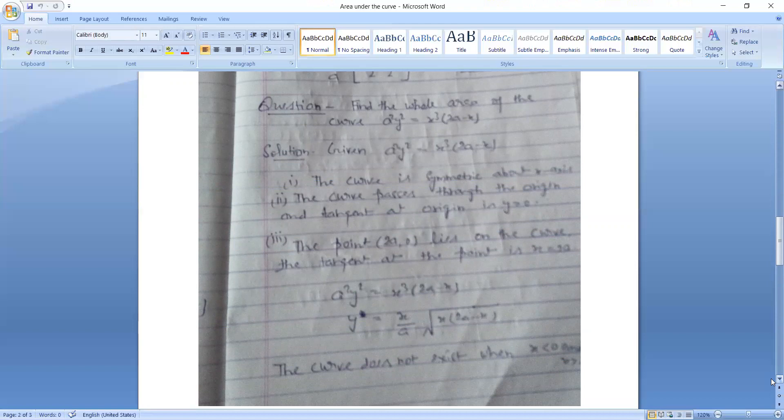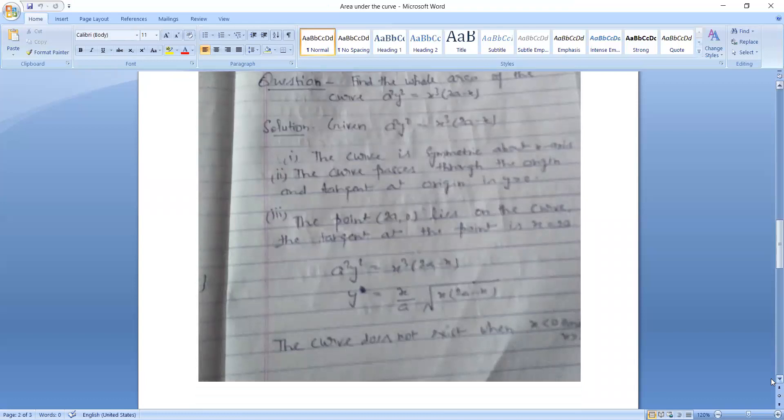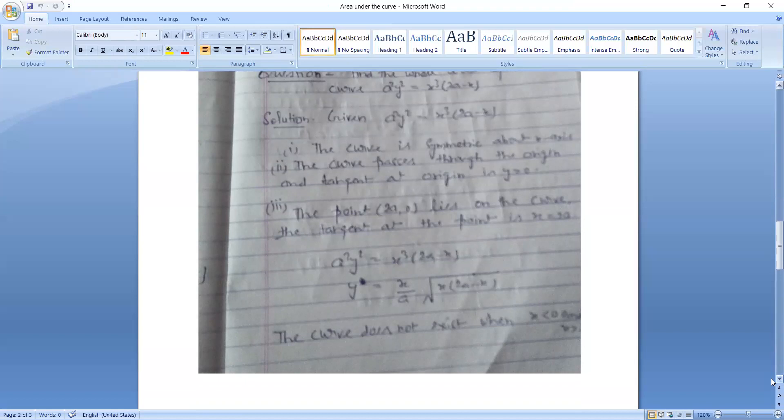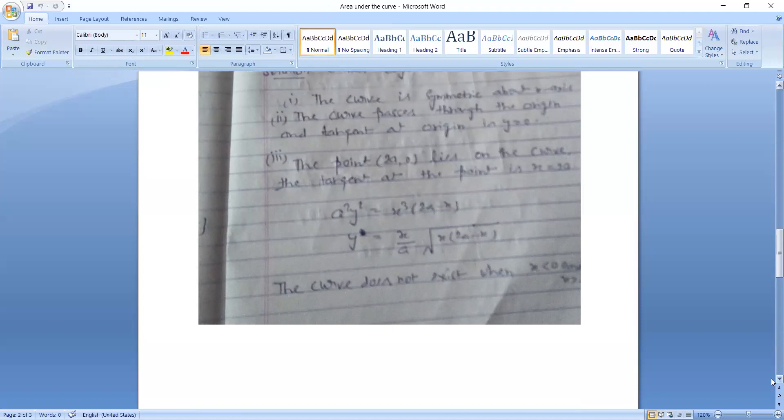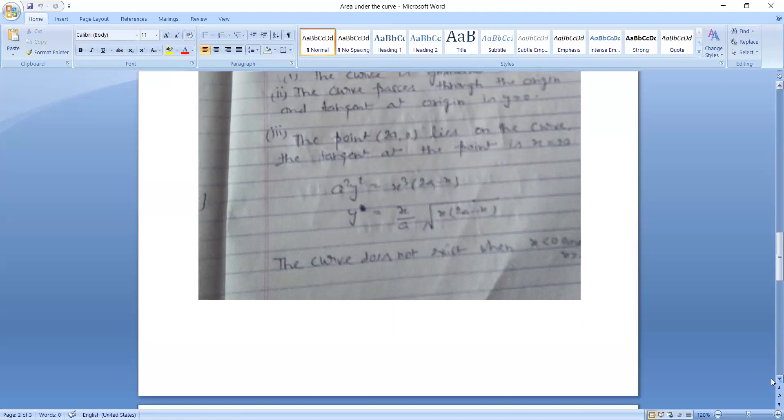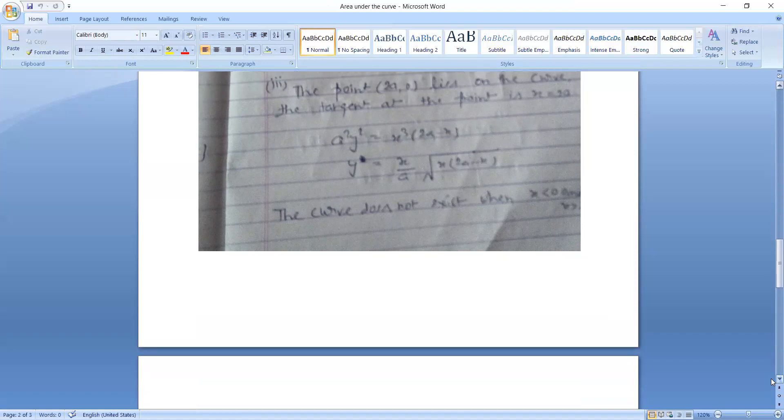The curve presents at the point X is equal to 2A. A square Y square is equal to X cube in bracket 2A minus X. That is Y is equal to X upon A root X in bracket 2A minus X. Here the curve does not exist when X is greater than 2A nor will the curve exist when X is less than 0.